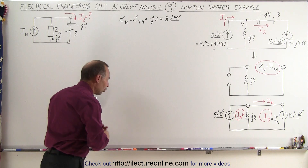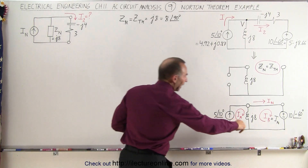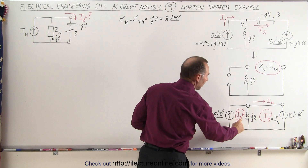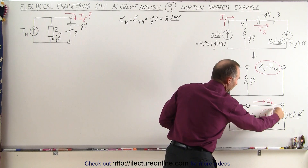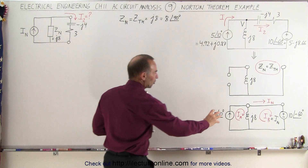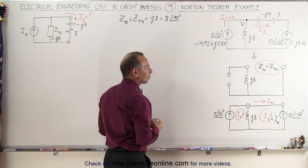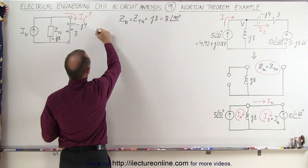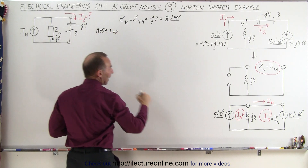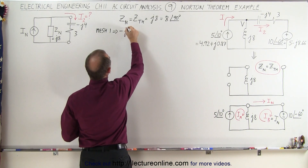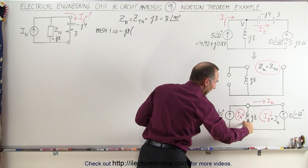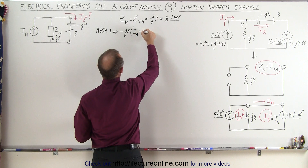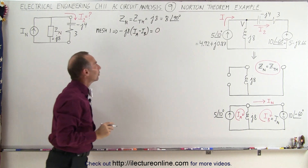Now I'll show the entire way of doing this using the mesh method. Summing all voltages around the first mesh: there's no voltage drop across the current source, but we do have a voltage drop across the inductor. Going in this direction, for mesh 1 we have minus J8 multiplied by (IA minus IB), because IB is in the opposite direction, and since we go all the way around the loop, that equals zero.